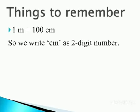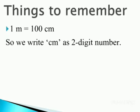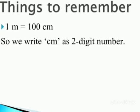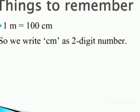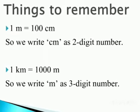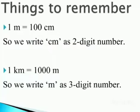First, 1 meter equals 100 centimeters. As 100 has two zeros, whenever centimeter comes with meter, we write centimeter as a two-digit number. And 1 kilometer equals 1000 meters. As you can see, 1000 has three zeros, so whenever meter comes with kilometer, we write meter as a three-digit number.